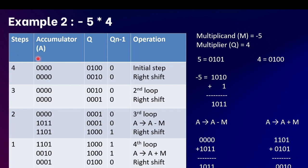At count equal to 4 the accumulator is 0000 and Q minus one is 0 by default in the initial step. The LSB of Q is 0 and Q minus one is also 0, so we perform an arithmetic right shift. After the shift, the accumulator remains 0000, Q becomes 0010, and Q minus one becomes 0. Count decrements to 3.